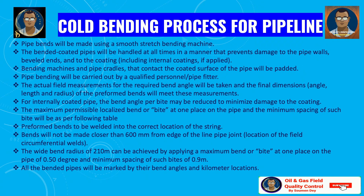The maximum permissible localized bend or bite at one place on the pipe and the minimum spacing of such bites will be as per the specification table. Bends will not be made closer than 600 mm from the edge of the line pipe joint or location of field circumferential welds. A wide bend radius of 210 meters can be achieved by applying a maximum bend or bite of 0.5 degrees at one place, with a minimum spacing of 0.9 meters between bites. All bent pipes will be marked by their bend angles and kilometer location for easy identification later.